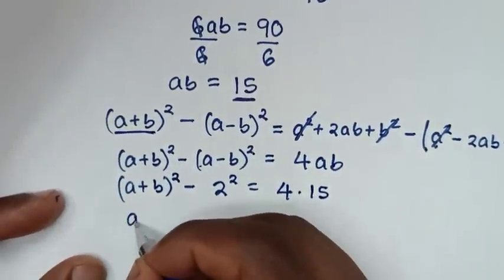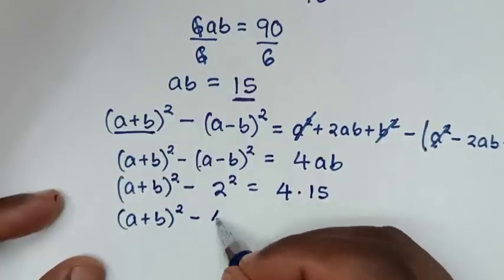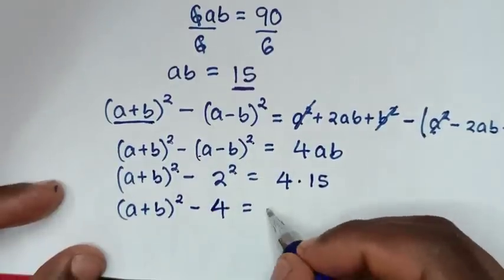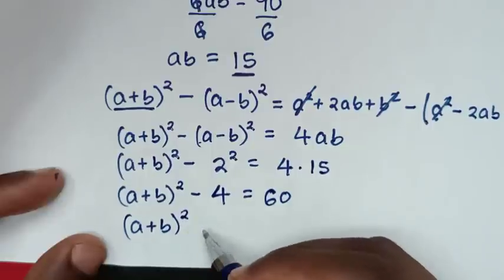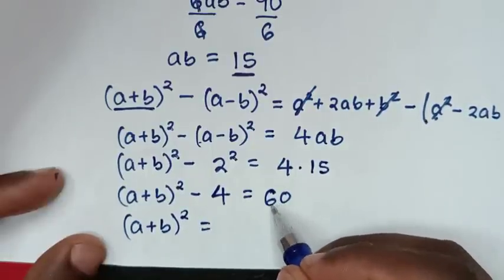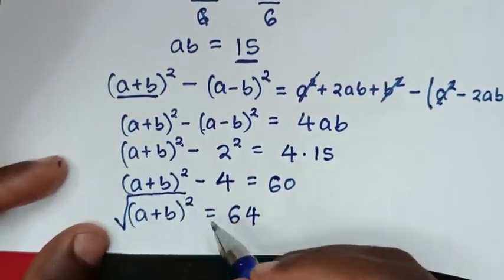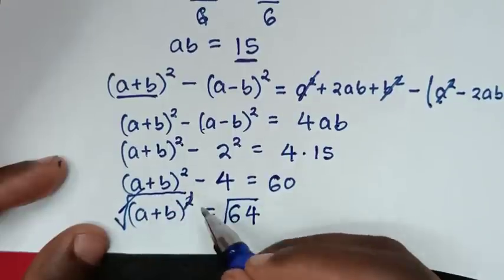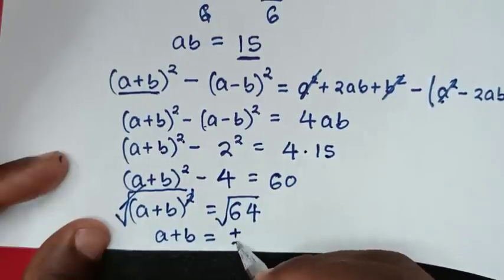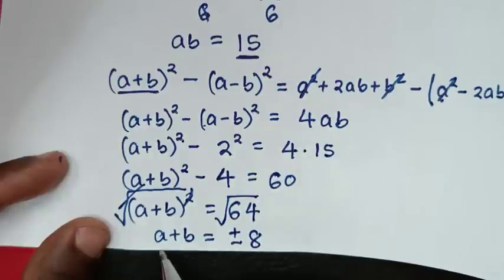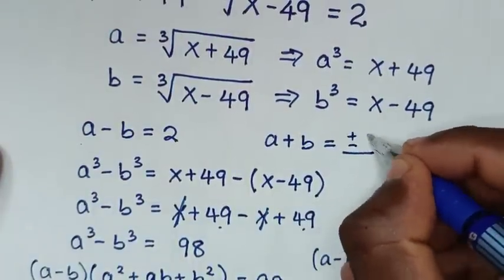So (a + b)² = 60 + 4 = 64. Taking the square root of both sides, a + b = ±8. So the value of a + b is plus or minus 8. This gives us two solutions.